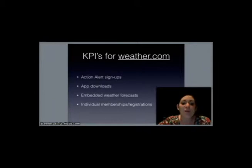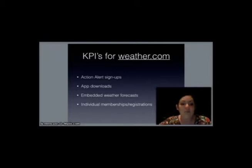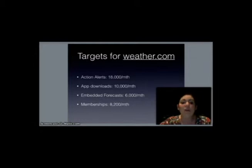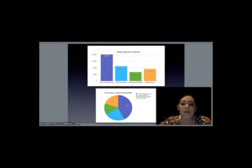Since top-of-mind awareness regarding forecasts is our objective, we want to track Key Performance Indicators: the number of weather.com action alert signups, number of app downloads, embedded weather forecasts to personalize web pages and blogs, and the number of individual memberships and registrations. For targets, we take our KPIs and give them values that reflect the online interaction we want to reach each month. Our targets are: action alert signups — 18,000; app downloads — 10,000; embedded weather forecasts — 6,000; and individual registrations — 8,200.